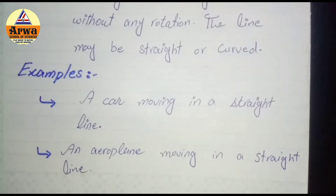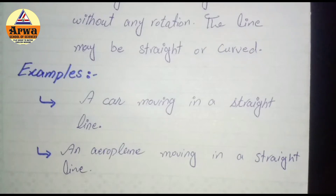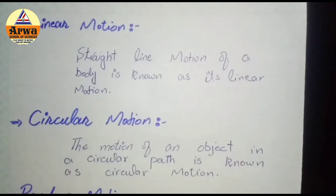Motion of ferris wheel — ferris wheel bhi ek curved line mein move kar raha hai, isliye iska bhi translational motion hai. Line ya to straight ho sakti hai ya curved ho sakti hai. But remember: wo body line mein to move kare, but without any rotation — jo rotation hai wo wahan nahi honi chahiye. Aise motion ko hum kehte hain translational motion.